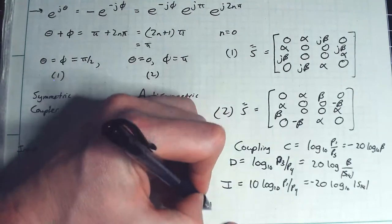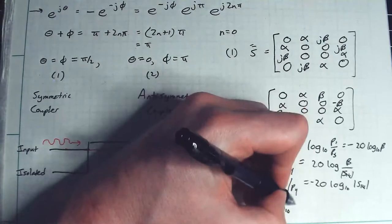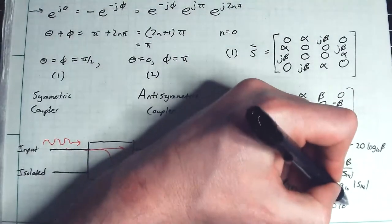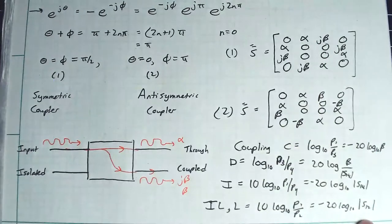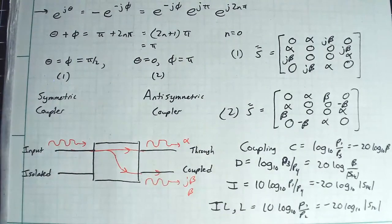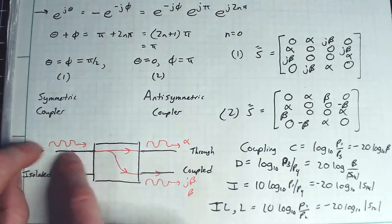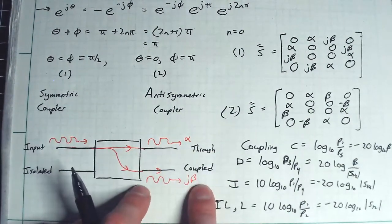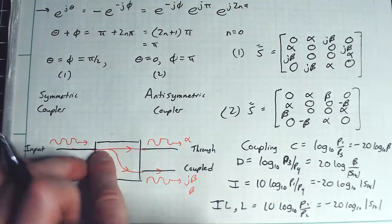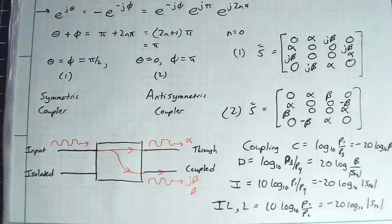Finally, insertion loss IL is defined as 10 times log base 10 of (P1/P2), which equals negative 20 times log base 10 of the magnitude of S12, in decibels. Insertion loss captures how much power sent into port one actually comes out of the through port two — ideally most of the power comes out there, with only a portion going to the coupled port three. You can adjust the alpha and beta ratio to tune this split.